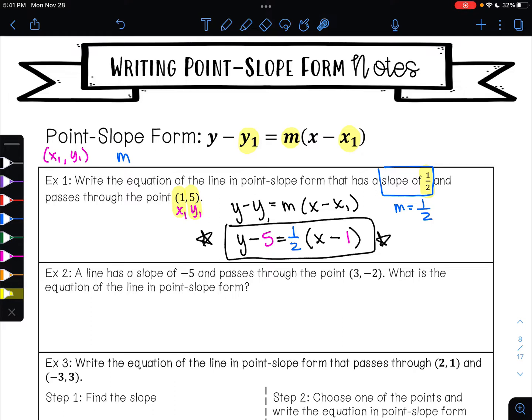Go ahead and pause the video and try doing the same exact thing on example two. Example two says a line has a slope of negative 5. When they tell me that, I know that m is negative 5. And passes through the point (3,-2). This tells me that x₁ is 3 and that y₁ is negative 2. So when I plug into my equation, my equation is y minus y₁ equals m times x minus x₁. So I'll have y minus negative 2 is equal to negative 5 times x minus 3.